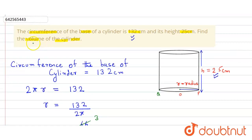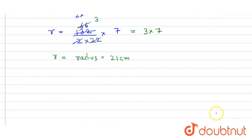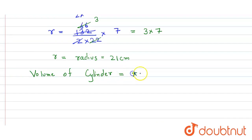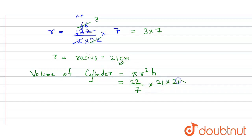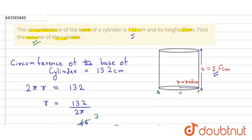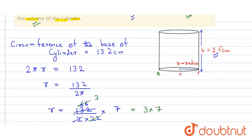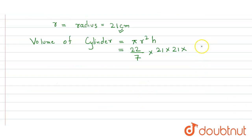Now we find the volume of the cylinder. The volume of the cylinder is equal to πr²h, where r is the radius and h is the height. So that will be equal to 22 divided by 7, into radius 21, into 21, into height 25 centimeters.